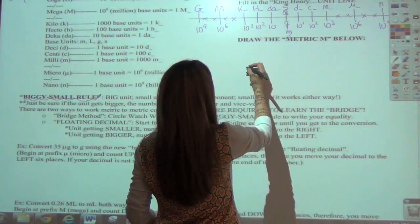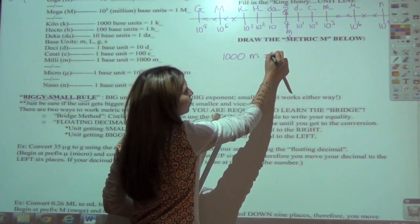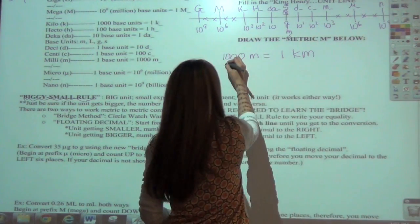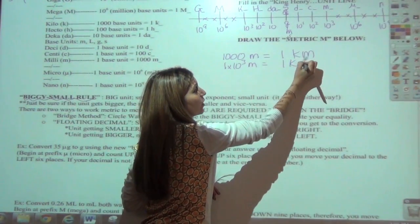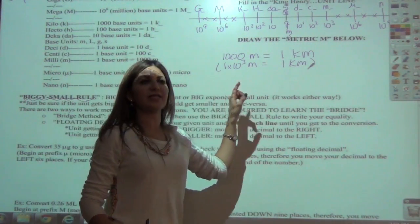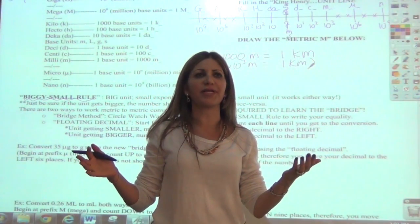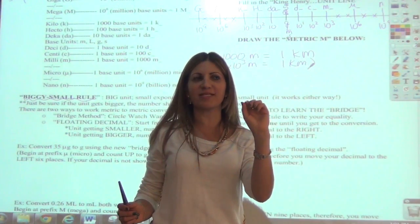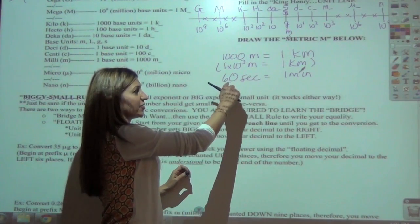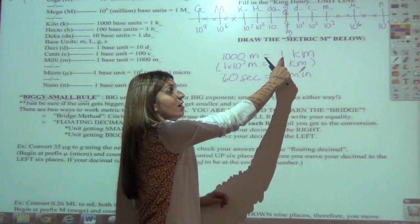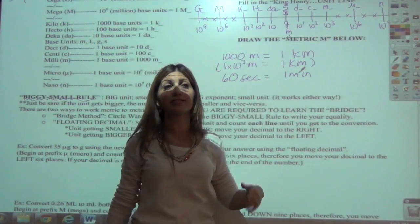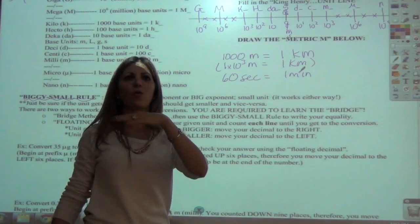So the correct equality: one thousand meters equals one kilometer, written as 1 times 10 to the third meters in one kilometer. The big number goes with the smaller unit; the smaller number — usually one — goes with the bigger unit.